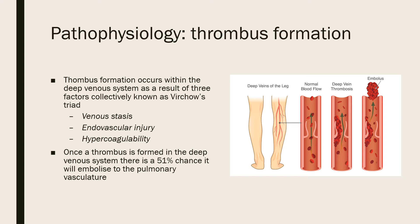To start off with, we have to get a thrombus. The thrombus forms in the deep venous system and forms as a result of three factors collectively known as Virchow's triad. Those three factors are venous stasis, endovascular injury, and hypercoagulability. When those are present you can get thrombus formation.